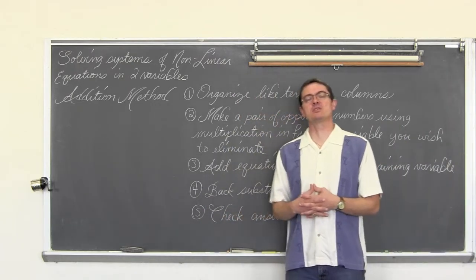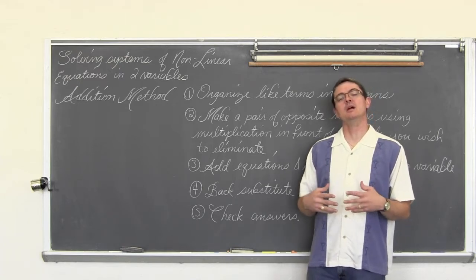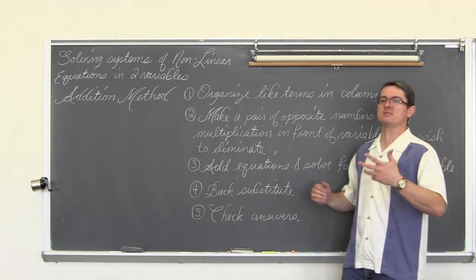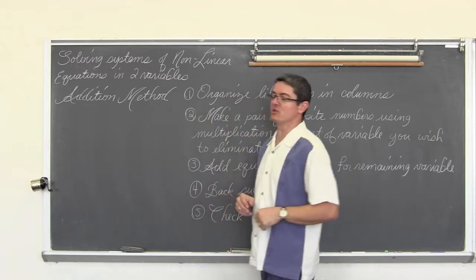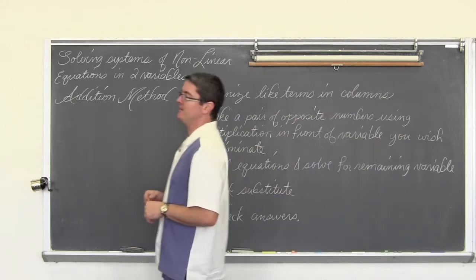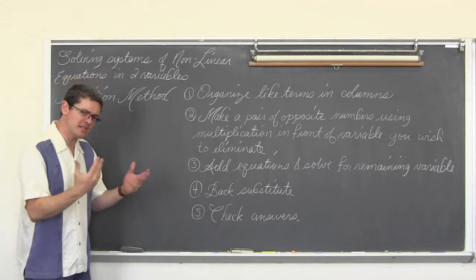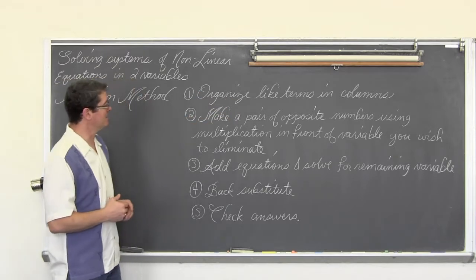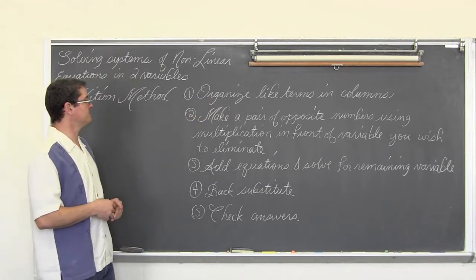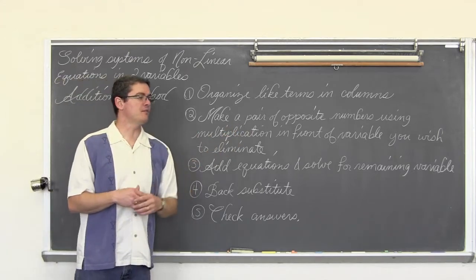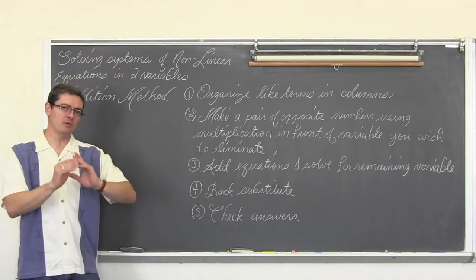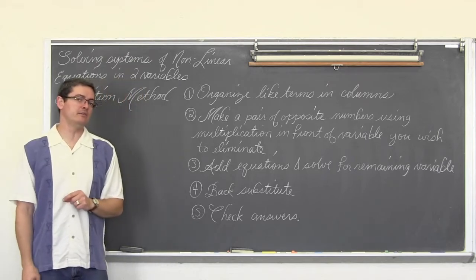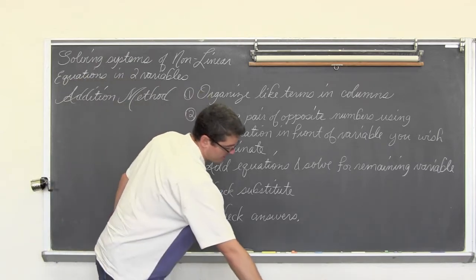In this video we are going to continue our discussion of solving two-variable non-linear systems — finding where lines cross parabolas, hyperbolas cross whatever. This time we are going to do the addition method. For the addition method of solving a system of equations, which sounds very similar to solving linear systems because it is, you are going to organize your like terms in columns, make a pair of opposite numbers occur in front of the variable you wish to eliminate, add the equations, solve for the remaining variable, back substitute, and then check your answer.